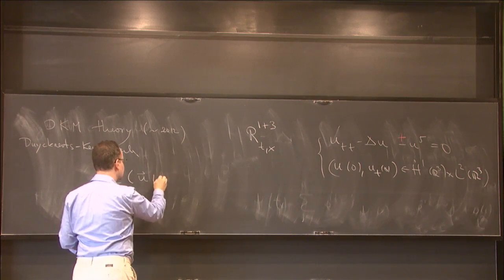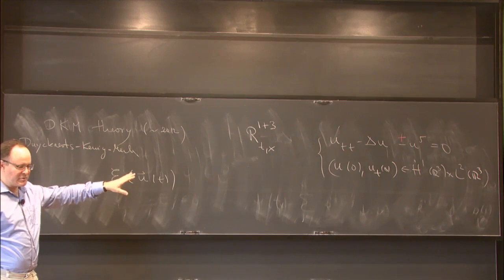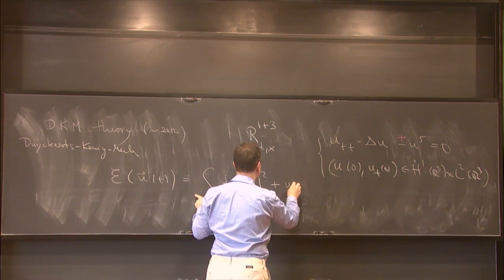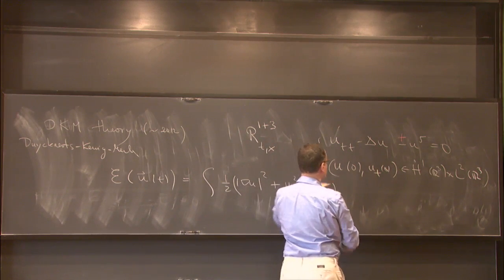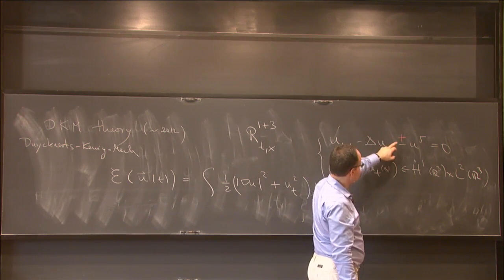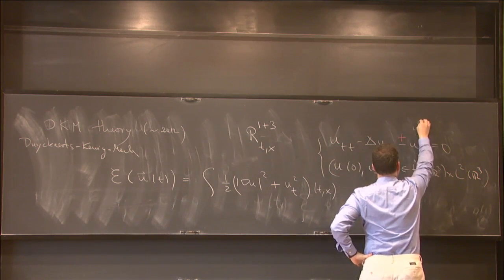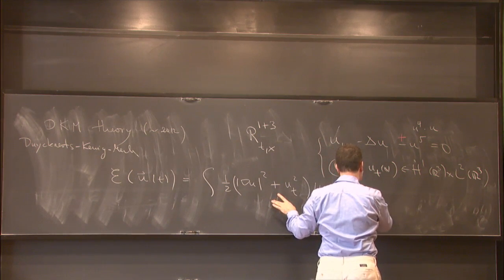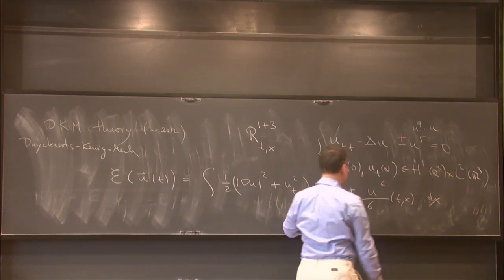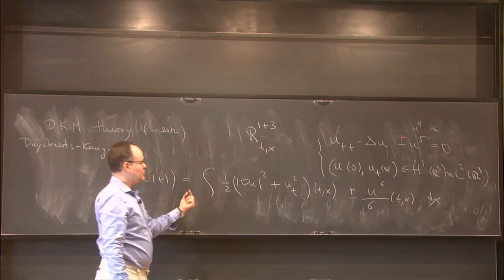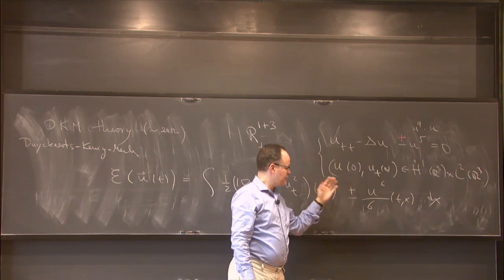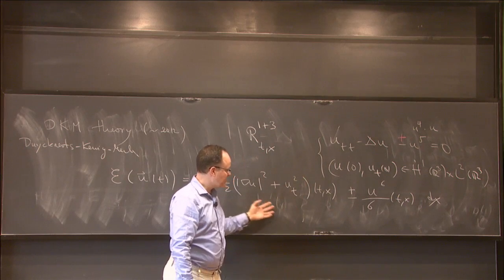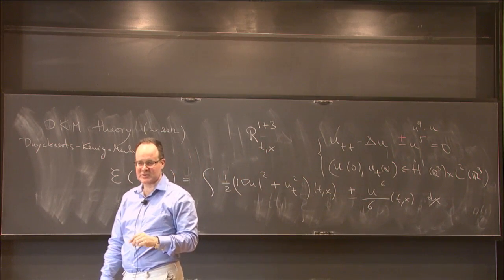This is a wave equation so you have a conserved energy. When I write vec{u}, I mean (u, u_t) in phase space. The energy E[vec{u}](t) = ∫(|∇u|² + |u_t|²)/2 - u⁶/6 dx is conserved. The first part is a positive operator, and u^5 = u^4 · u where u^4 is a positive (time-dependent) potential. If you take the plus sign, nothing here competes and nothing can go to infinity. But with the minus sign, the kinetic part and the potential part can both go to infinity simultaneously.